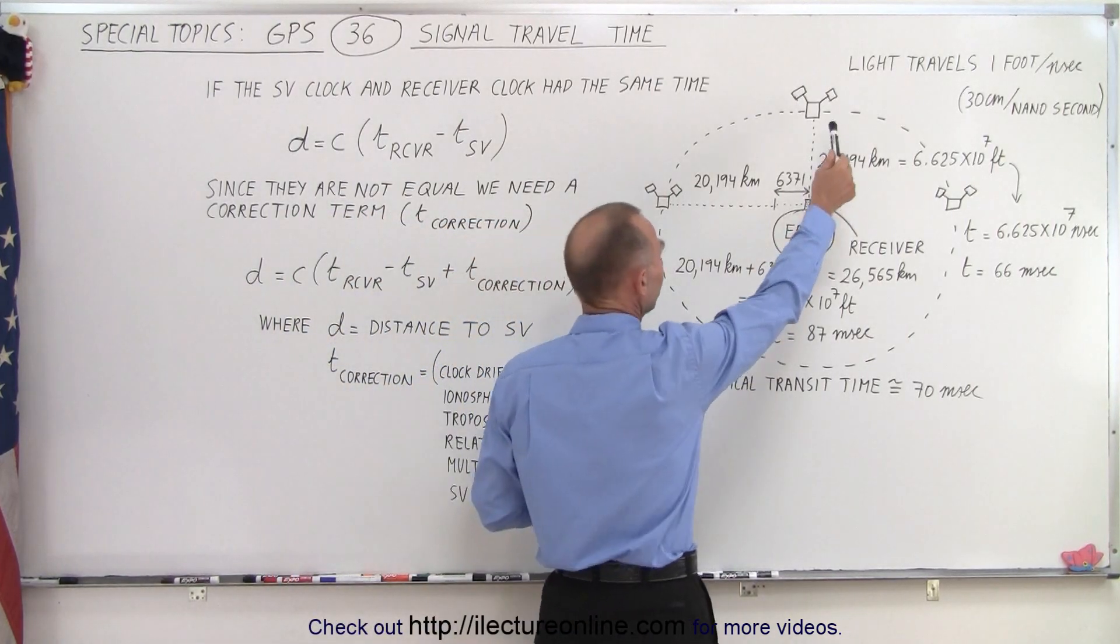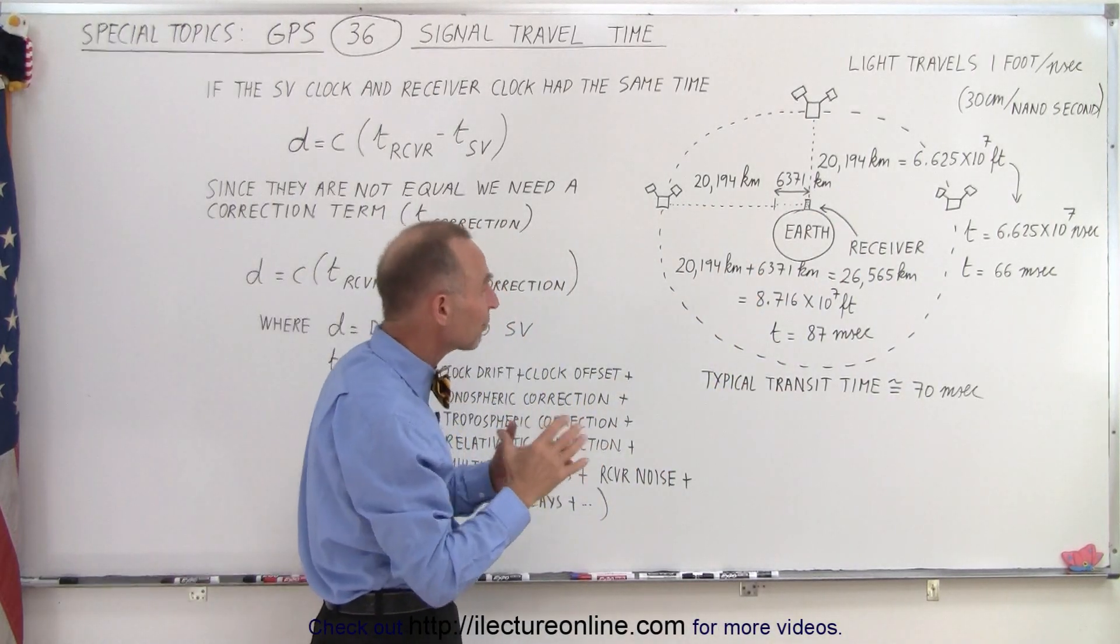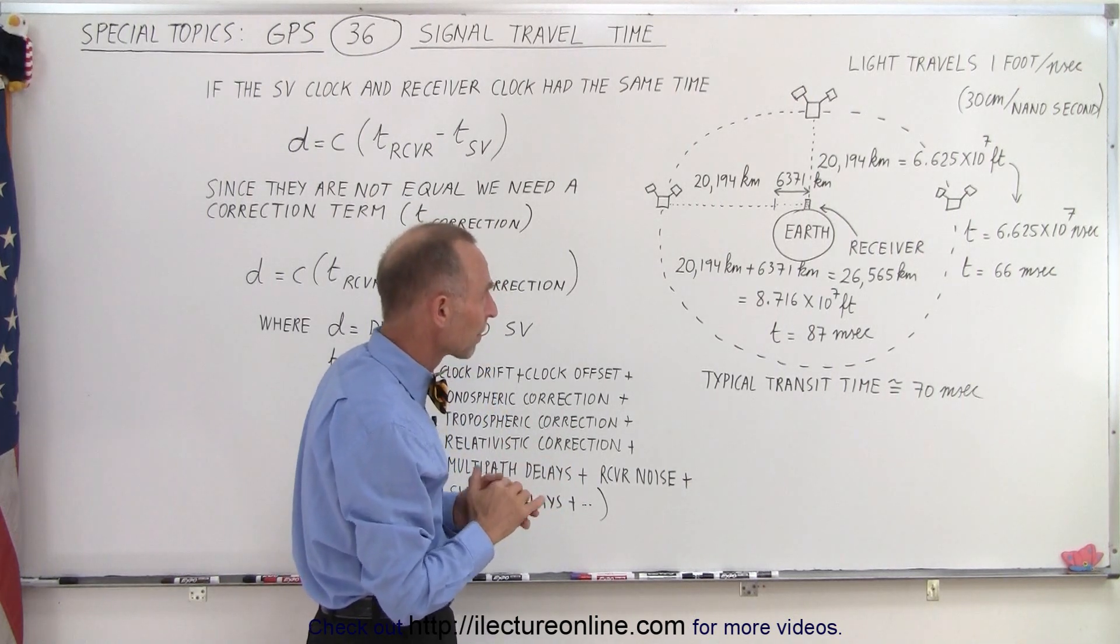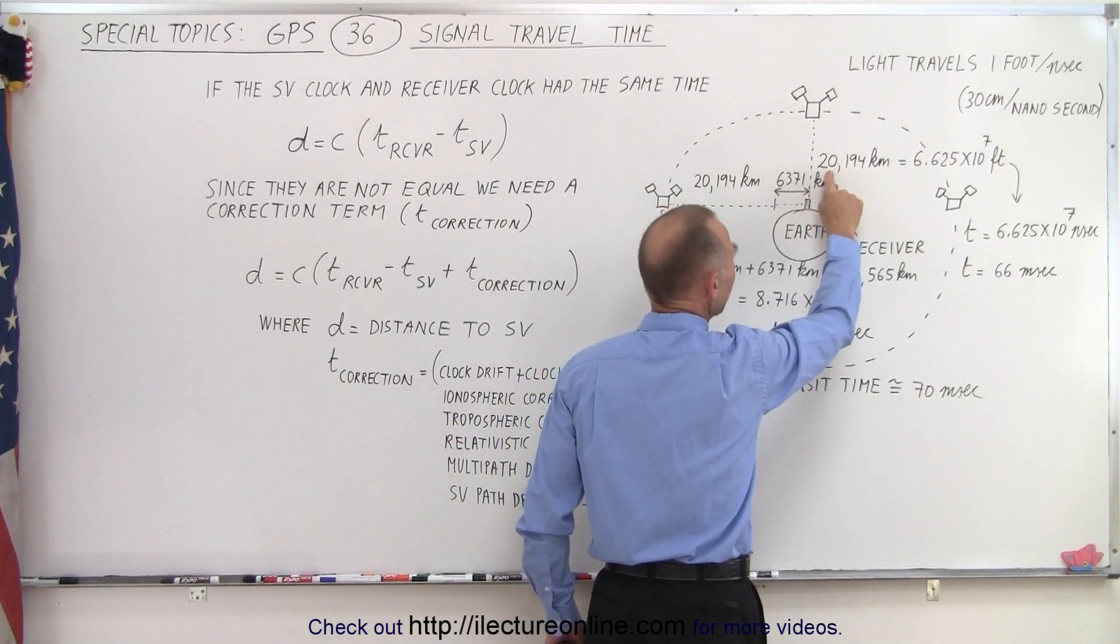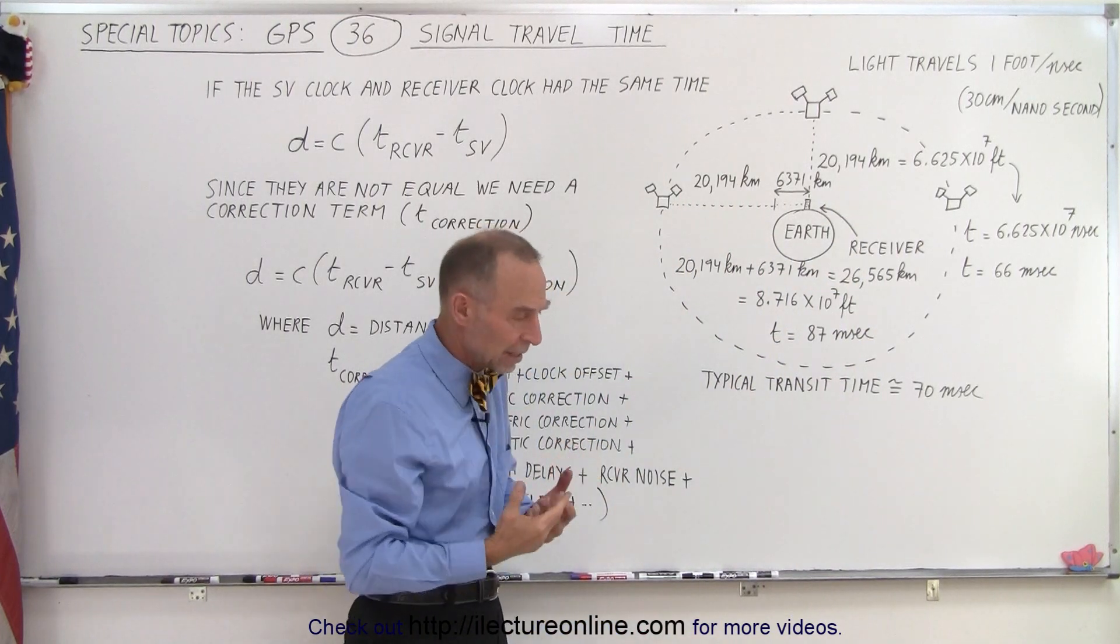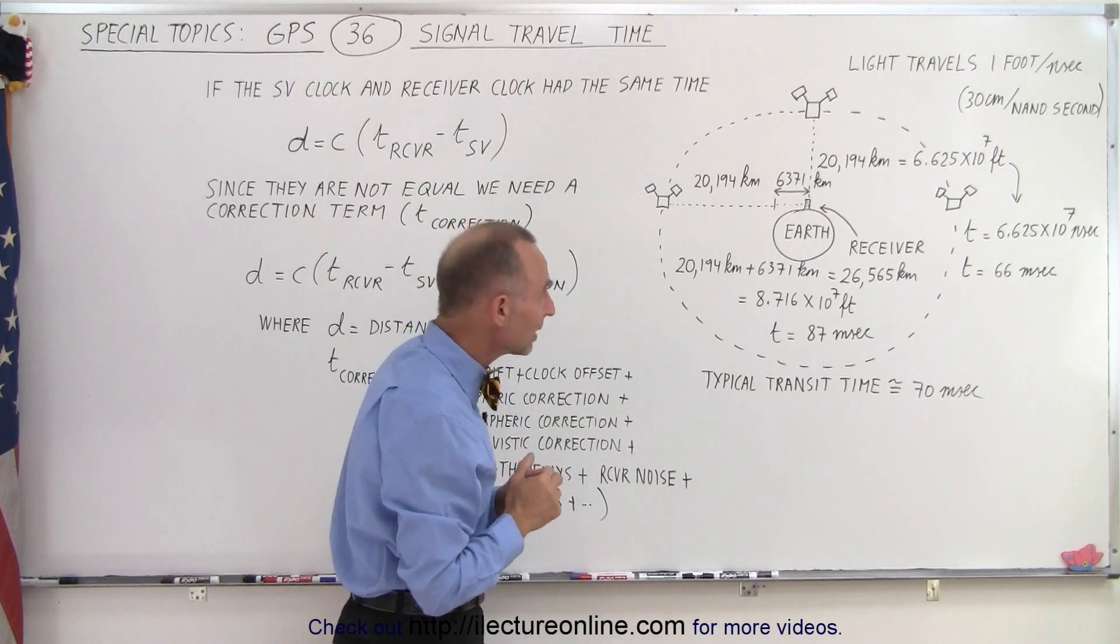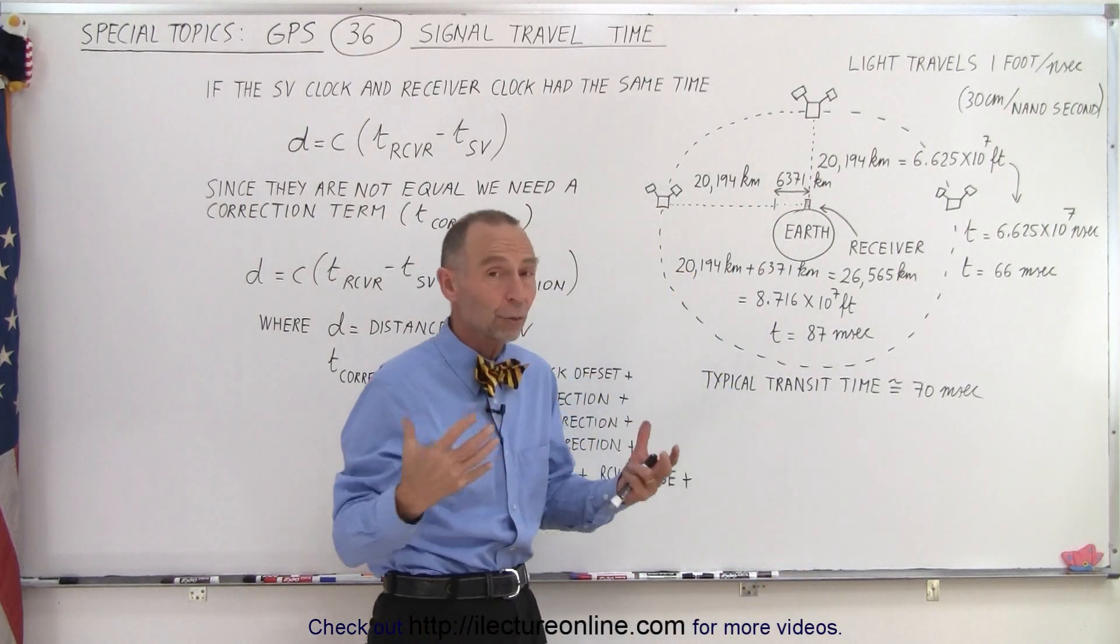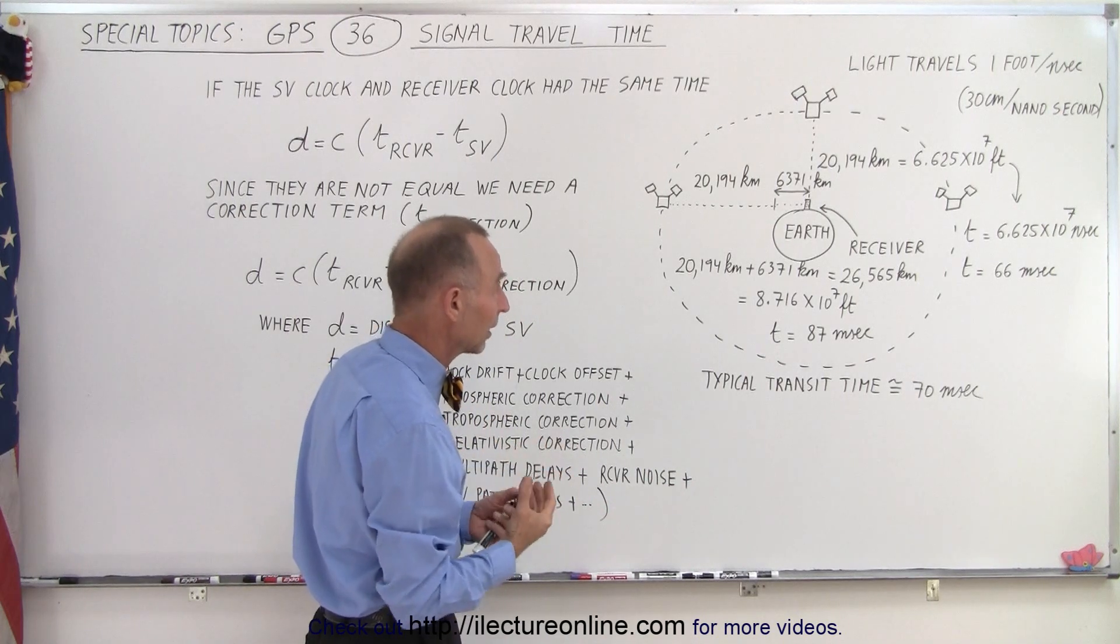The orbit of the SVs is such that they take two trips around the earth in just less than 24 hours, about 23 hours and 56 minutes or so. Because of that they need to have an altitude of about 20,194 kilometers above the surface of the earth. Now the eccentricity can be as much as 0.02 so that varies a little bit. We can take the radius of the earth at 6,371 kilometers, which varies depending on where on earth we are. But again this is a rough modeling.